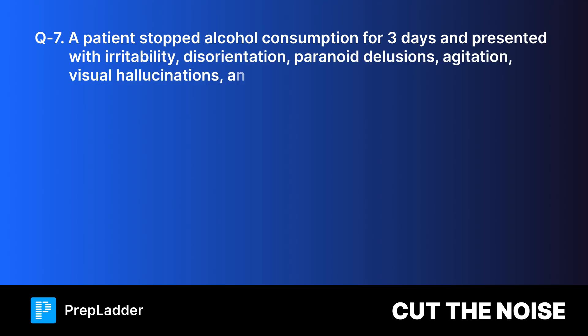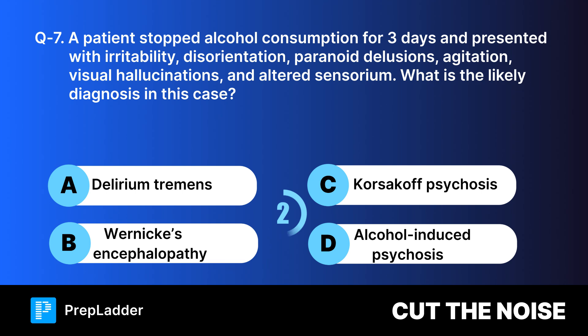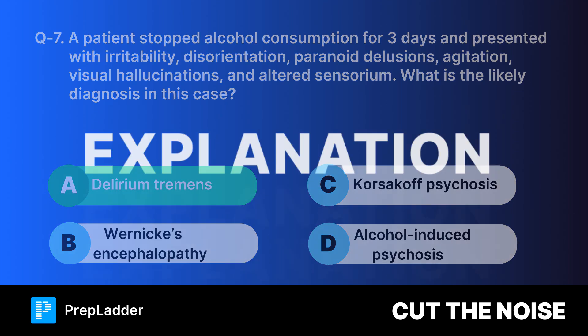Question seven. A patient stopped alcohol consumption for three days and presented with irritability, disorientation, paranoid delusions, agitation, visual hallucinations, and altered sensorium. What is the likely diagnosis in this case? Your options are, and the correct answer is delirium tremens. Here's the explanation.